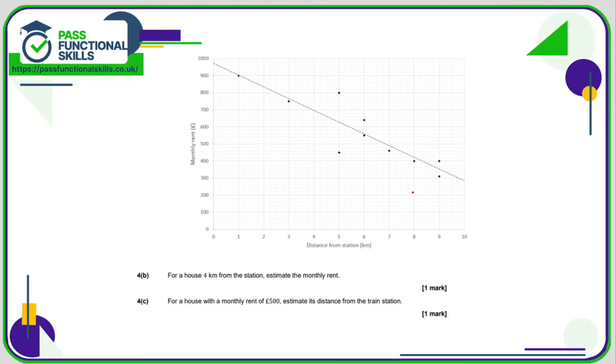Now using this line of best fit we're going to estimate other data points. For a house that is four kilometers from the station estimate the monthly rent. Well four kilometers from the station is here so we go up to the line and see that equates to 700 pounds as an estimate. For a house with a monthly rent of 500, so let's find 500 pounds and that goes to this point here, and I would say that's seven kilometers.